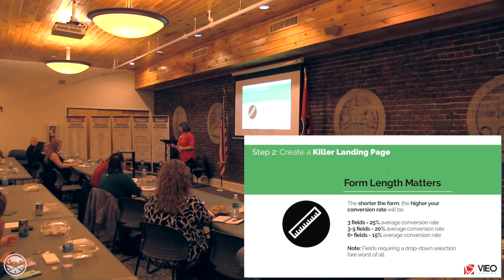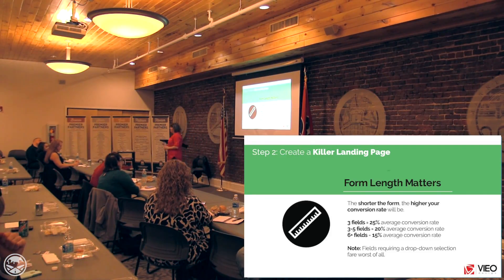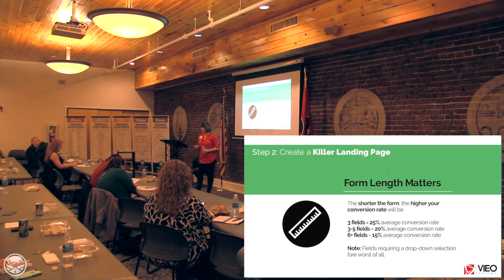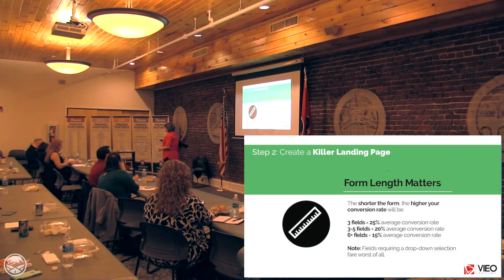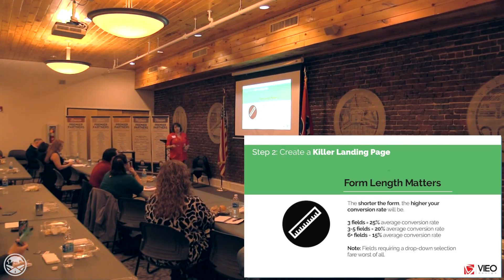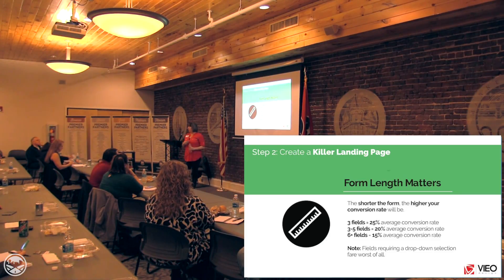The shorter the form, the more leads you'll get. If you have three fields, you get about a 25% average conversion rate. Three to five fields, you're down to about 20%. Six or more fields and it's a 15% average. Just remember, you'll have opportunities to capture more information as you get to know that lead. Drop-downs, while sometimes necessary, will also lower conversion rate.